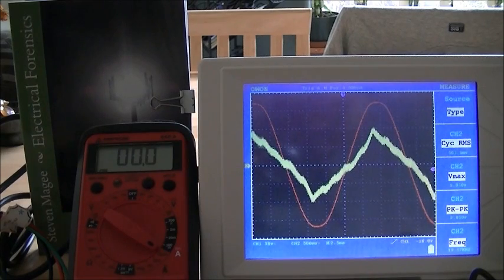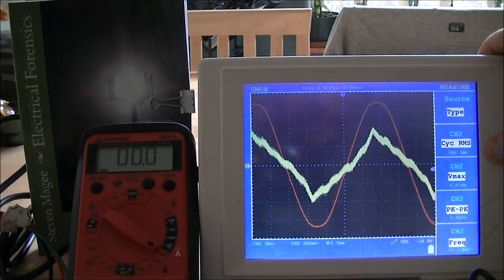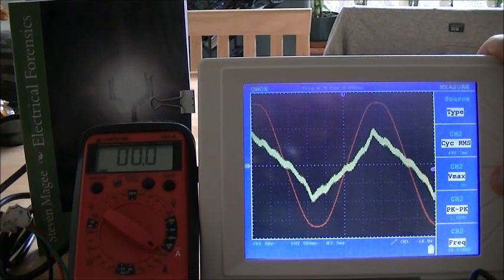I'm just going to go through some of the numbers on the grounding system. We have an RMS value of 506 millivolts, we have a maximum voltage of 1 volt, we have a peak to peak value of 2 volts.